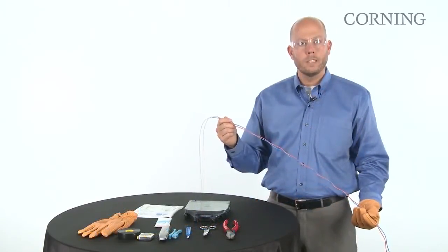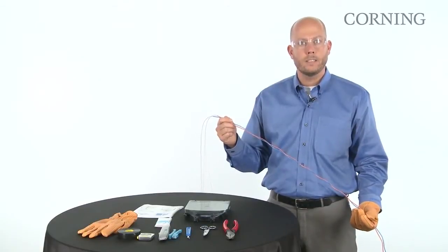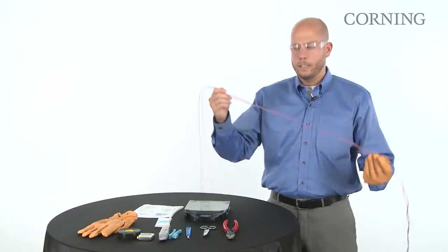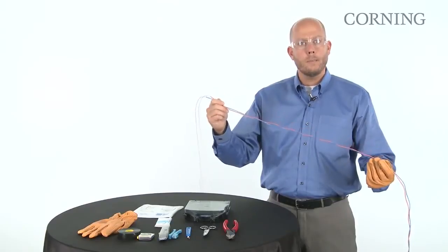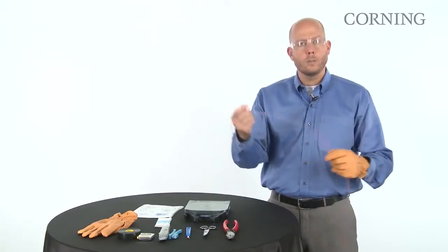For splicing preparation and the CCH pigtailed cassette, strip back 48 inches of buffer tube or tight buffered fiber to exposed fiber.